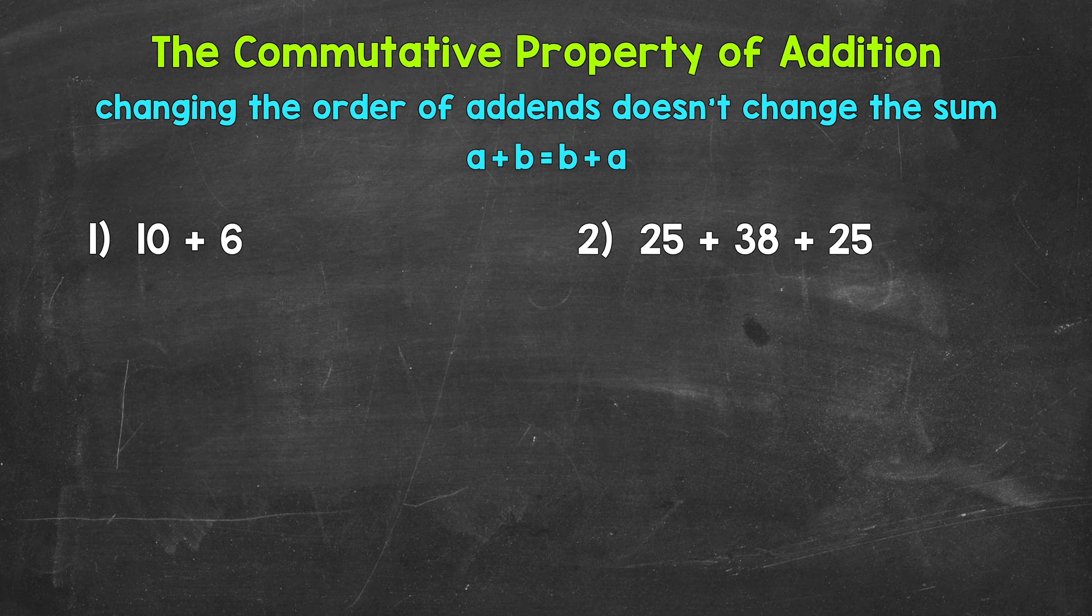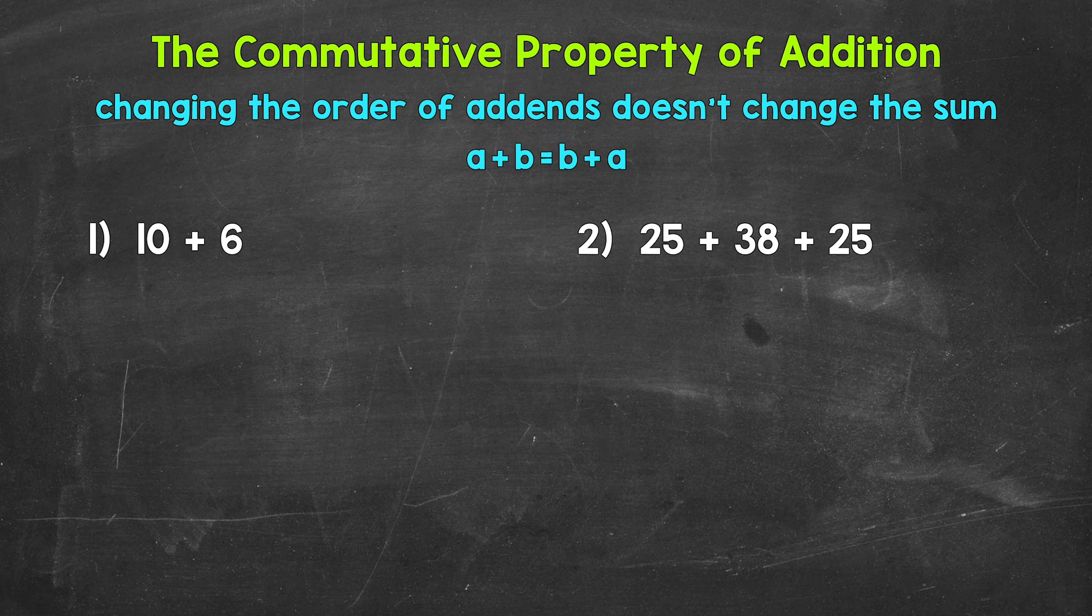So A plus B will equal the same exact thing as B plus A. We can think of commute or move when it comes to the commutative property. We can move the addends around and still get the same answer.